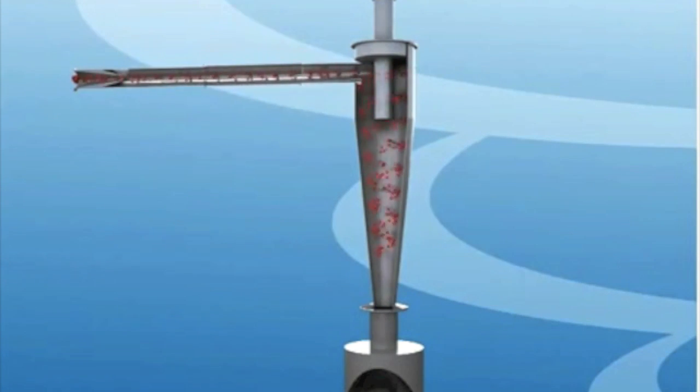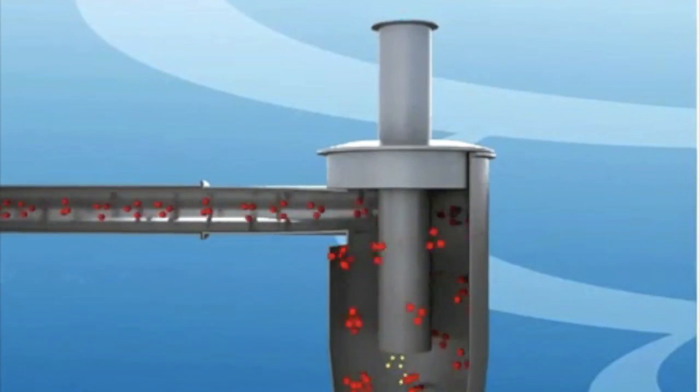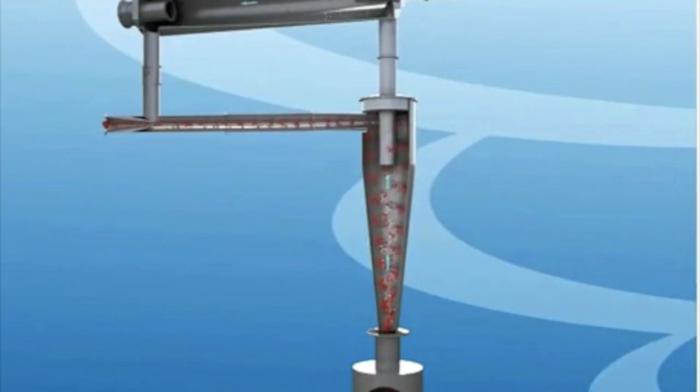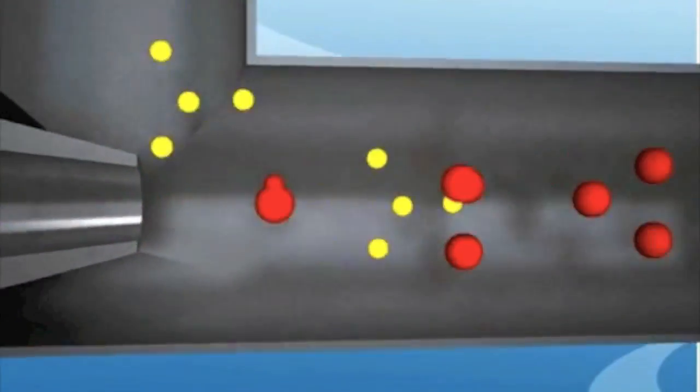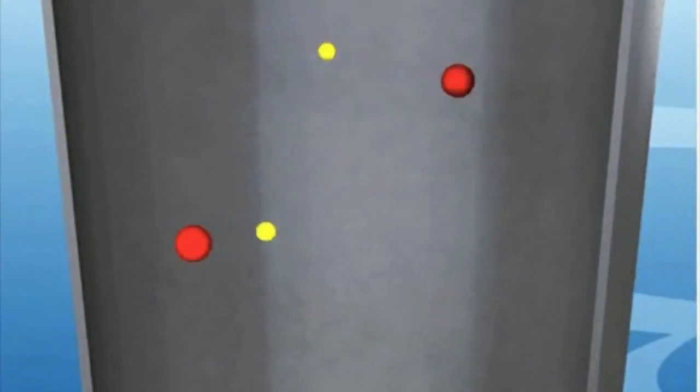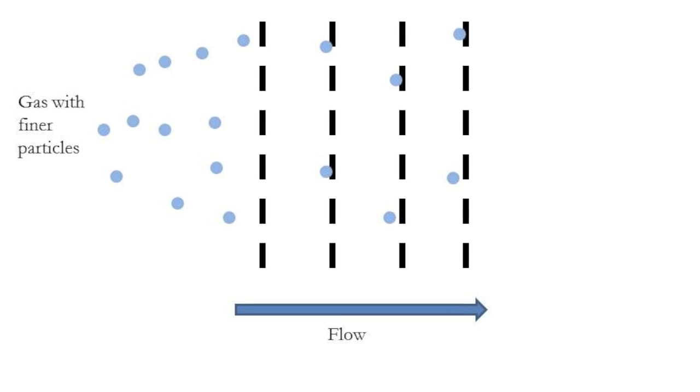As gas enters the cyclone separator from the top, it starts flowing in a helical pattern down the unit, then goes straight up through the center, and exits at the top. Particles have a much higher momentum, and thus will not be able to go through the helical path the gas takes. They will sediment at the bottom of the unit, and then will be sent back to the gasifier to get reprocessed.